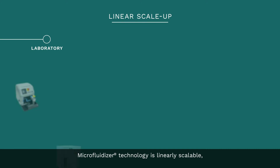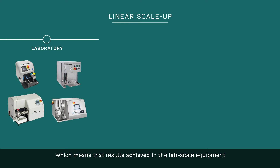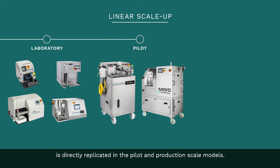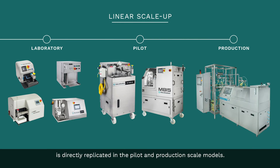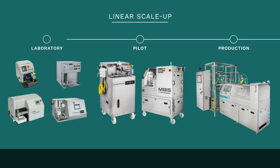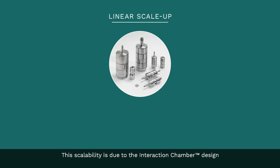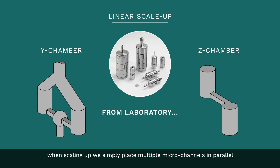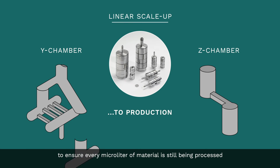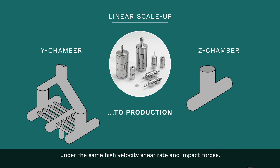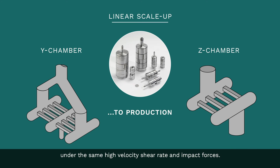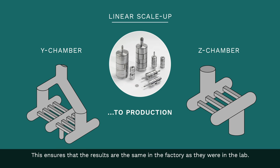Microfluidizer technology is linearly scalable, which means that results achieved in the lab-scale equipment are directly replicated in the pilot and production scale models. This scalability is due to the interaction chamber design. When scaling up, we simply place multiple microchannels in parallel to ensure every microliter of material is still being processed under the same high velocity shear rate and impact forces. This ensures that the results are the same in the factory as they were in the lab.